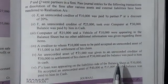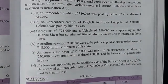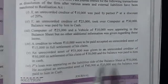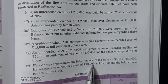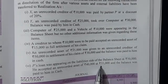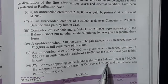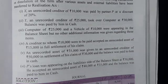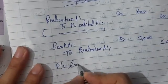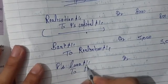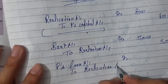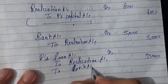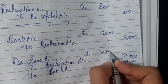Sixth transaction: P's loan of 50,000 was appearing on the liability side of the balance sheet. P accepted an unrecorded asset of 40,000 at 35,000 and the balance was paid in cash. What matters is that P is settling 35,000 of his loan with the asset; remaining 15,000 is paid via bank. Journal entry: P's Loan Account Dr. to Realization Account (for asset taken at 35,000) and to Bank Account (for 15,000 cash paid).